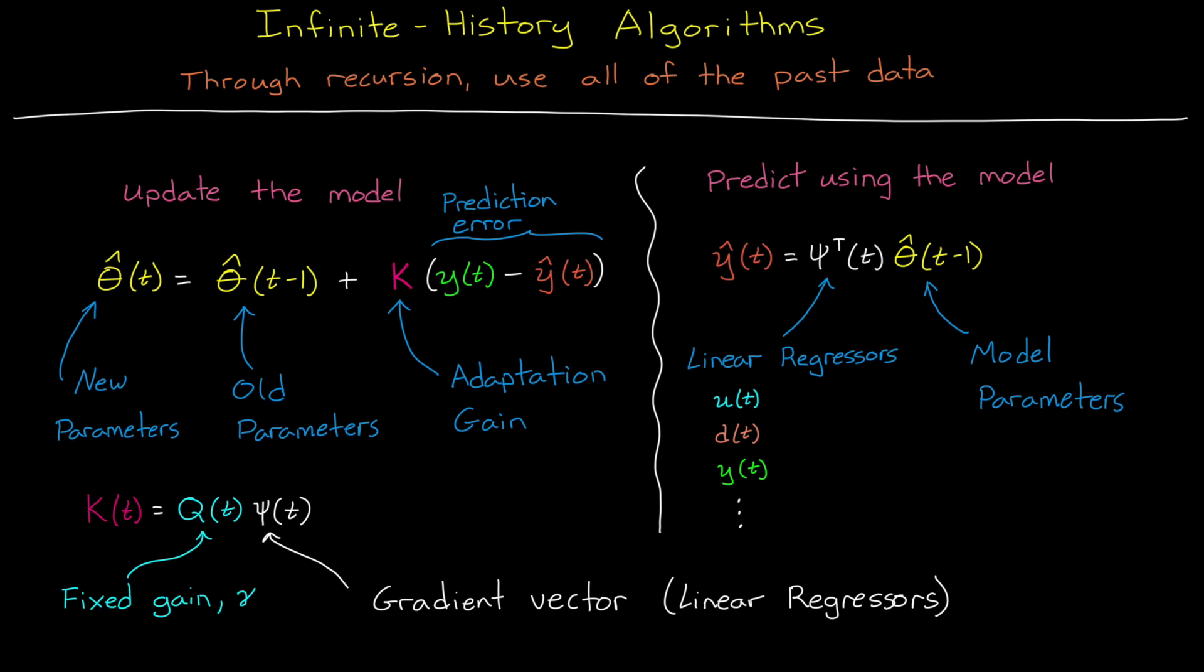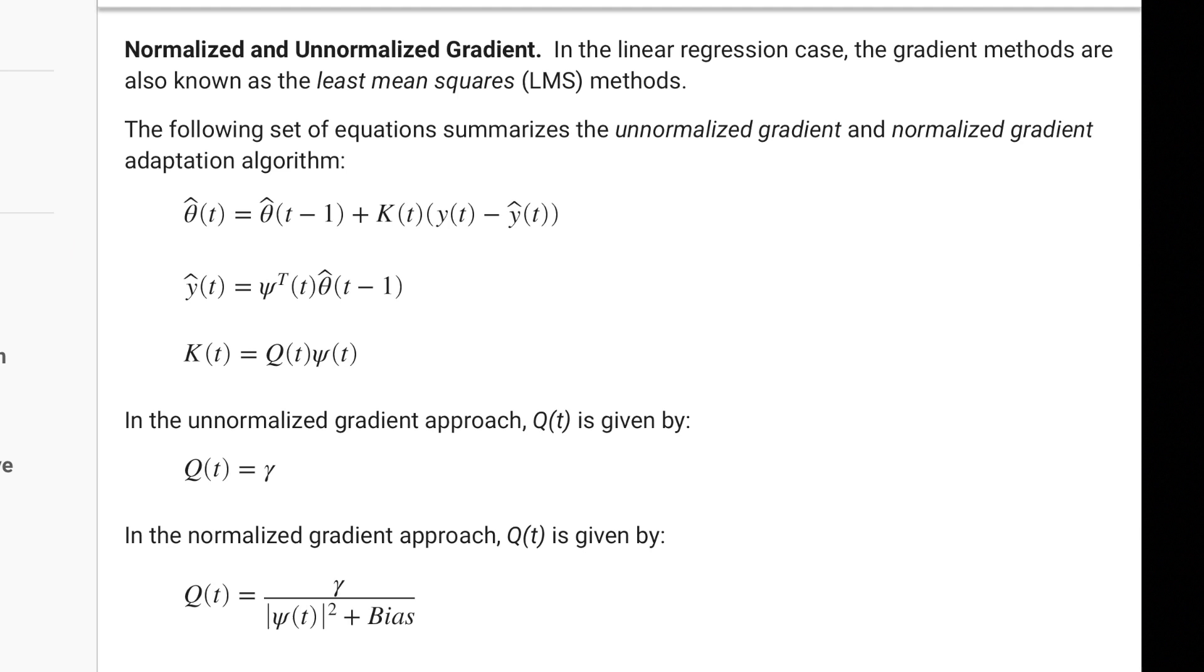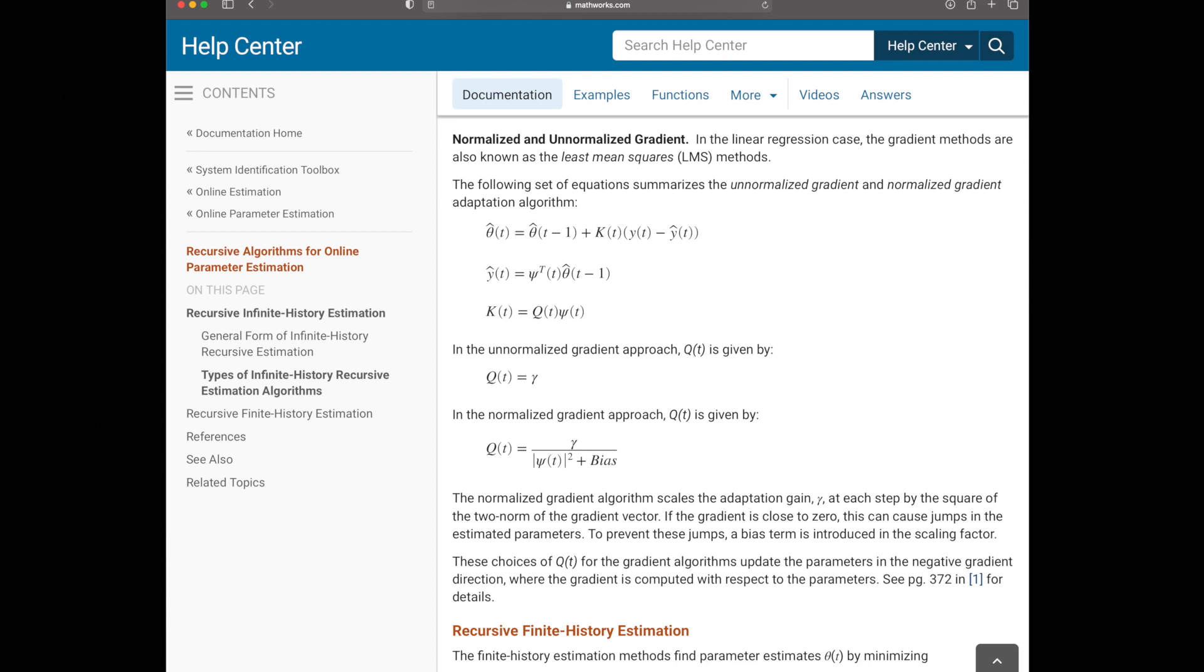In this linear regression case, this method is also known as the least mean squares method. There are actually multiple flavors of this approach. I just described the unnormalized gradient method, but there's also a normalized method that scales the adaptation gain by the square of the 2-norm of the gradient vector.